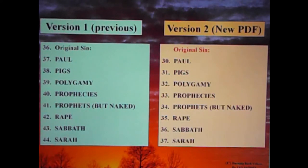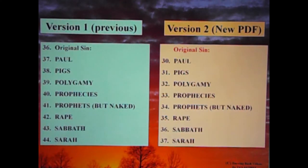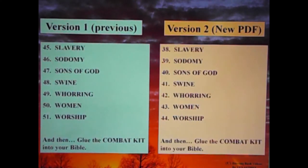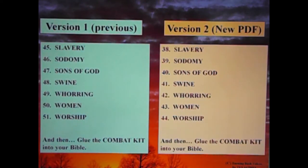Paul. Pigs. Polygamy. Prophecies. Prophets. Butt naked — okay, that's the way Didat spelled it. Rape. Sabbath. Sarah. Slavery. Sodomy. Sons of God. Swine. Whoring. Women. Worship. And then 'glue the combat kit into your Bible' is included in both versions.